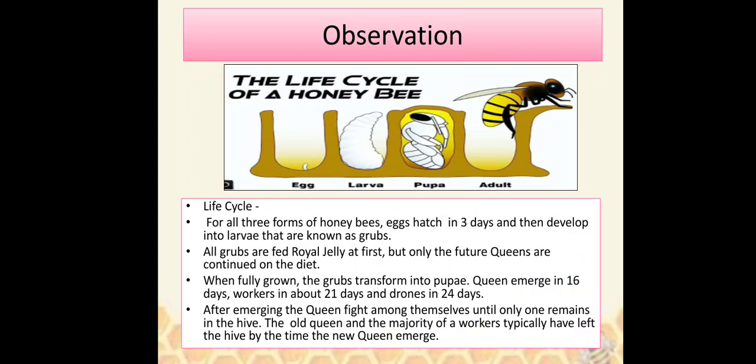Life cycle: For all three forms of honeybees, eggs hatch in three days and then develop into larvae known as grubs. All grubs are fed royal jelly at first, but only the future queens continue on this diet. When fully grown, the grubs transform into pupae. Queens emerge in 16 days, workers in about 21 days, and drones in 24 days. After emerging, the queens fight among themselves until only one remains in the hive. The old queen and the majority of workers typically leave the hive by the time the new queen emerges.